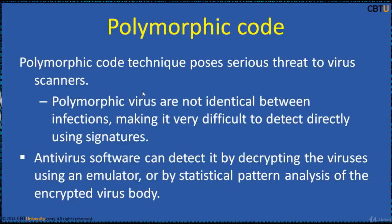Polymorphic code technique poses a serious threat to virus scanners. Polymorphic viruses are not identical between infections, making it very difficult to detect directly using signatures. Anti-virus software can detect them by decrypting the virus using an emulator, or by statistical pattern analysis of the encrypted virus body.